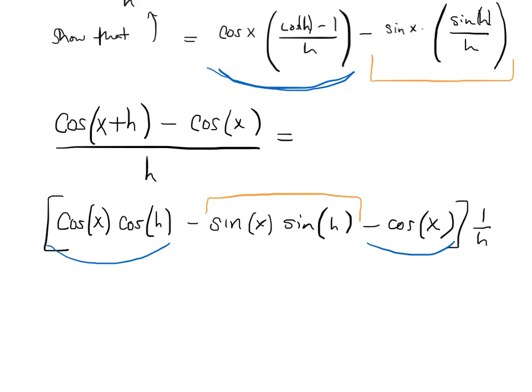So, cosine x, cosine h, minus cosine x. That's grouping the blue stuff. Minus sine x, sine h. Right.